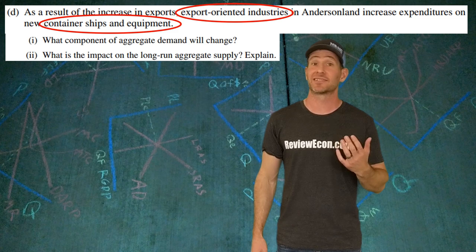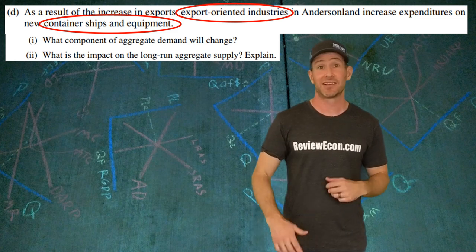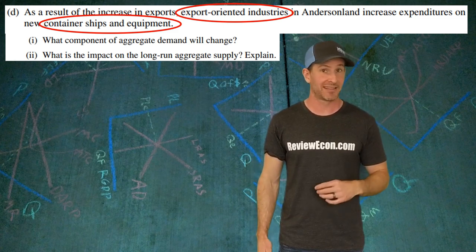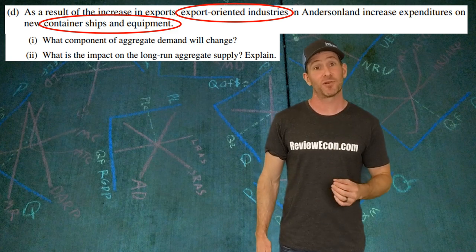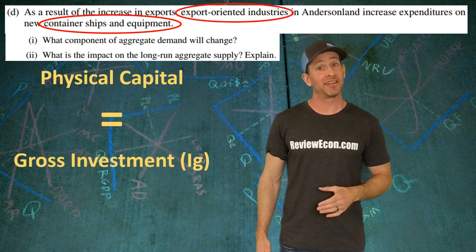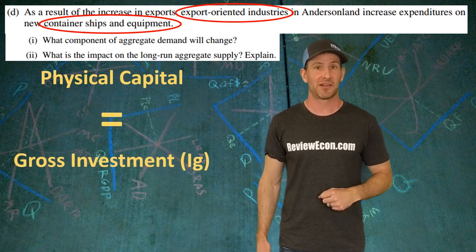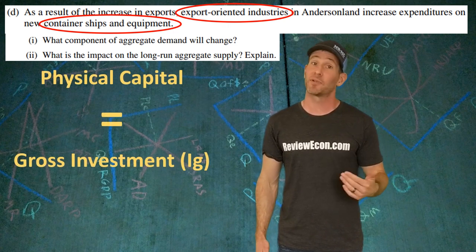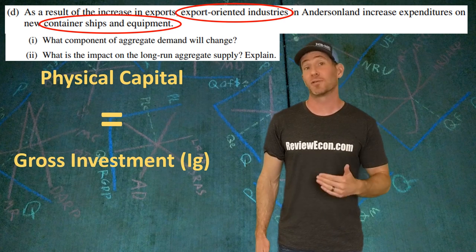it's C, consumption, IG, gross investment, G, government purchases, and XN, which is exports minus imports, or net exports. The component here that is actually changing is gross investment. Business purchases of capital equipment is counted in gross investment.